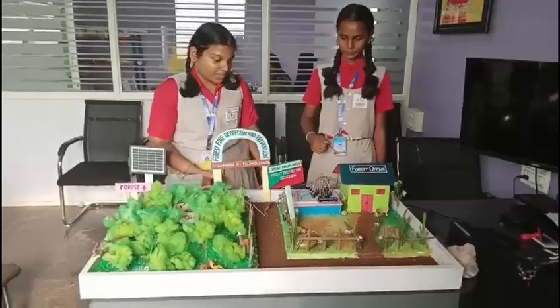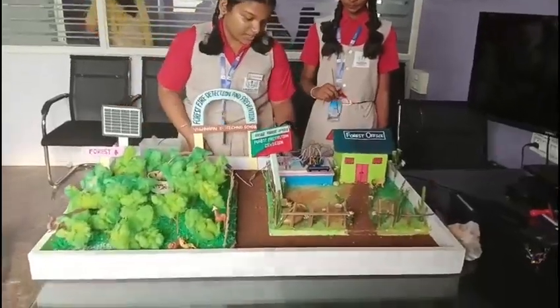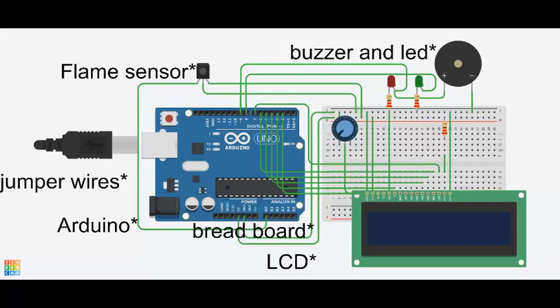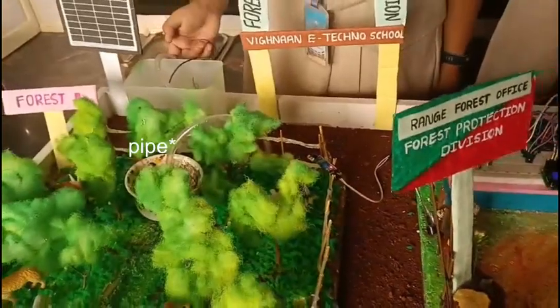The materials required for this project are: red board, audio board, jumper wires, LCD display, two LED lights, buzzer, flame sensor, a plastic pipe, battery, and switch.